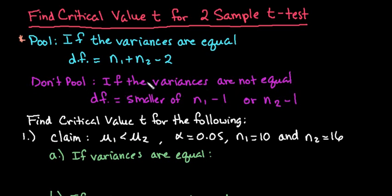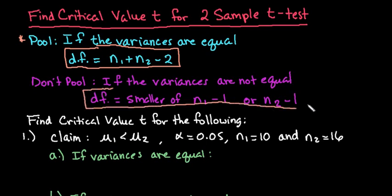There are different rules for finding the degrees of freedom in order to find your critical value on a table. Or even if you're finding it in a calculator, you do have to know how to find the degrees of freedom. So if you are pooling, in order to find the degrees of freedom, you're going to take your sample size of your first one plus the sample size of your second one, and you're going to subtract two. If you aren't pooling, the degrees of freedom is just the smaller of your sample sizes minus one. So whichever sample size is smaller, you would subtract one from it, and that would be the degrees of freedom that you are going to use.